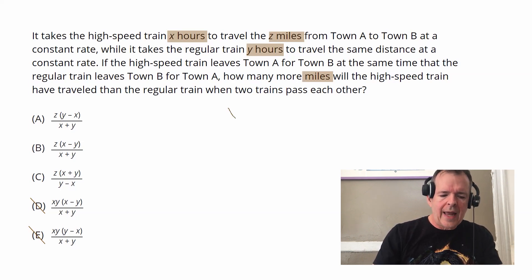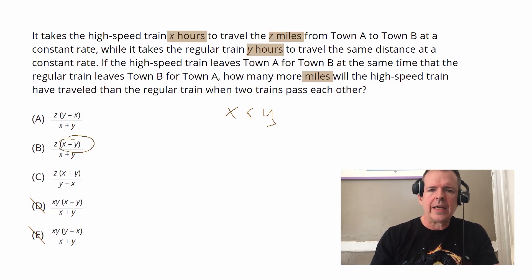So then we can, using logic, identify that X has to be less than Y. That must be true. Now, why that's a big deal is because we see X minus Y in answer choice B. So that turns that whole expression negative. There's nothing else in that expression that could change the sign again. Well, remember what they're asking is how many more miles. That's going to be a positive number. So through logic, B also got eliminated.